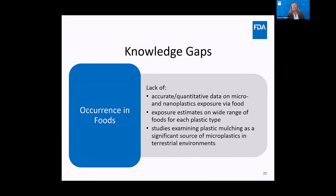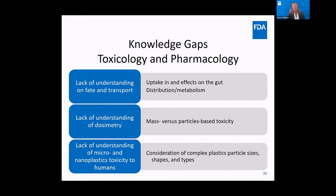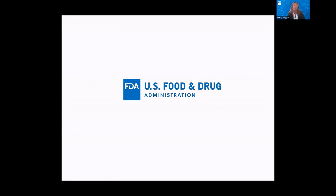We are lacking information on the occurrence of microplastics in foods, particularly quantitative data, as well as broader coverage of different food types — specifically terrestrial environments, as opposed to aquatic environments, where much of the research has been focused to date. We have a number of knowledge gaps in toxicology and pharmacology, including lack of understanding of fate and transport, dosimetry, and the toxicity of microplastics and nanoplastics to humans, especially considering the complexity of different plastic types. I look forward to answering questions and the panel discussion at the end. Thank you.